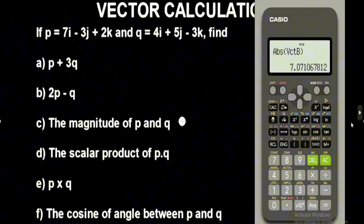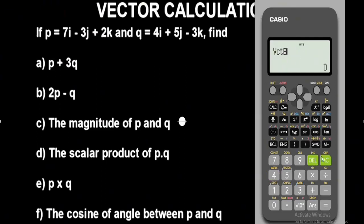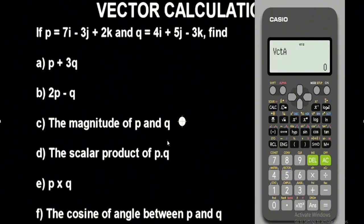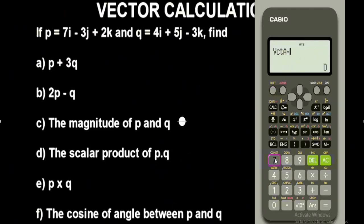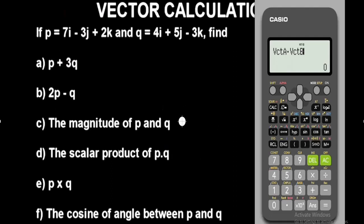Now to get the scalar dot product, remove the previous result. Press Shift 5 and select vector A, option 3, which represents vector P. Then bring out the dot sign by pressing Shift 5 again — dot is option 7, press 7. Then for vector Q which is vector B, press Shift 5 and option 4. Press equals. This is the dot product — the scalar product — and we get it to be 47.